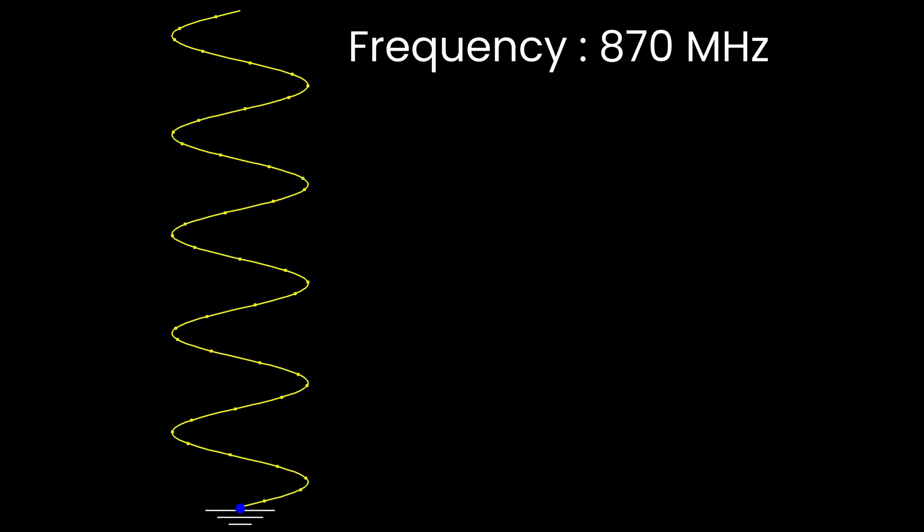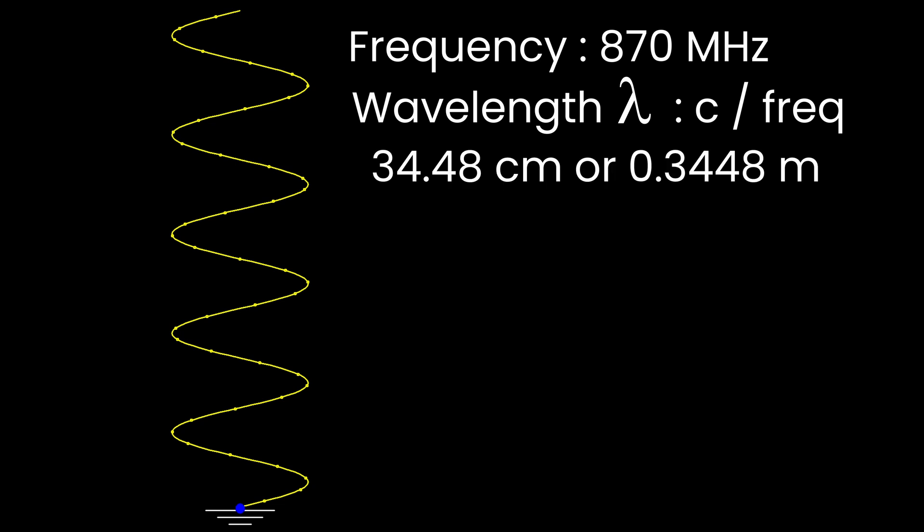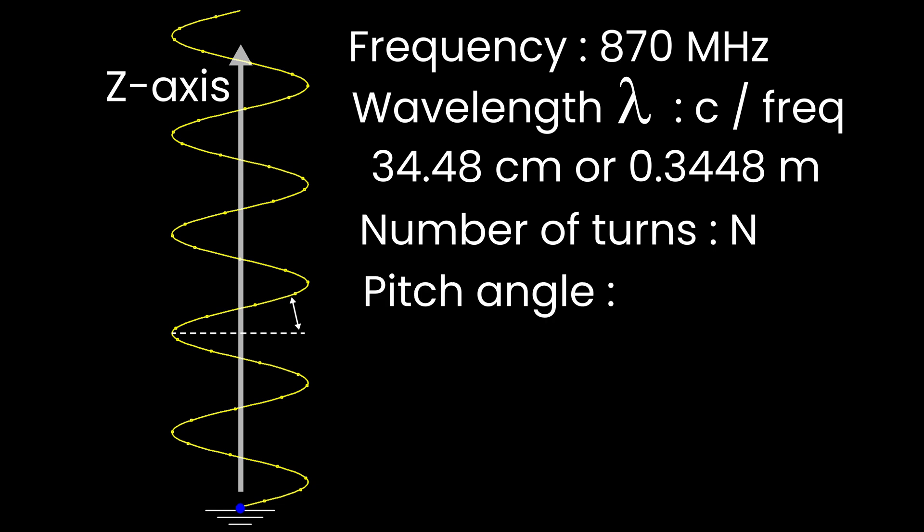We start with the frequency 870 megahertz. The wavelength lambda is given then by the formula speed of light divided by the frequency, which in our case is then 35.5 centimeters or 0.345 meters. The helical antenna consists in a number of spiral turns that we will call N. Looking at the antenna like it is on screen in the vertical position, we will call that vertical position the Z axis. The spiral makes an angle with the horizontal axis called the pitch angle or alpha. So if we look at two successive spirals, they are spaced by a certain spacing distance, S.